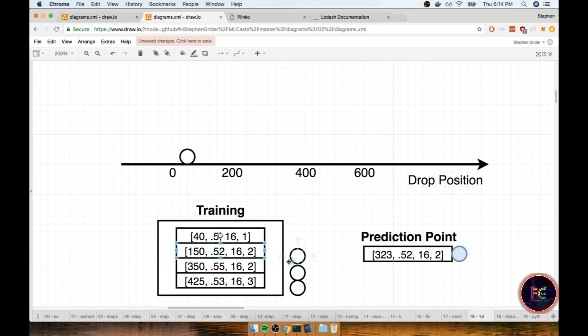We then put another data point on for the 150, so maybe that would go right around there. We then had our 350, so maybe right there, and then the 425 right here. After we put those together we then said okay, our prediction point. How close or far away is this thing from any of these existing points? If the prediction point had a 323 drop point, then we would take this thing and put it maybe right around there or so.